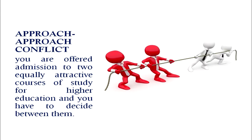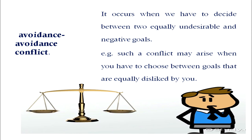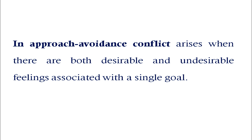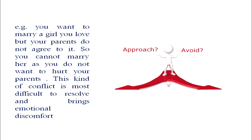Approach-approach conflict: for example, you are offered admission to two equally attractive courses of study for higher education and you have to decide between them. Avoidance-avoidance conflict occurs when we have to decide between two equally undesirable and negative goals — such a conflict may arise when you have to choose between goals that are equally disliked by you. Approach-avoidance conflict arises when there are both desirable and undesirable feelings associated with a single goal. For example, you want to marry a girl you love but your parents do not agree, so you cannot marry her as you do not want to hurt your parents. This kind of conflict is most difficult to resolve and brings emotional discomfort.